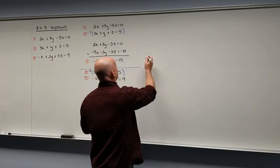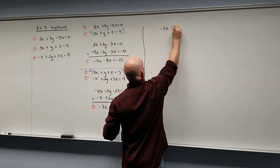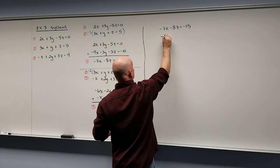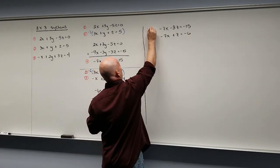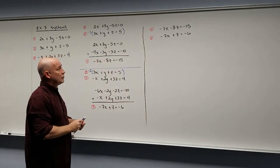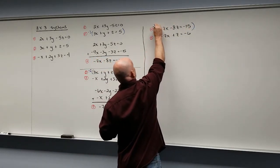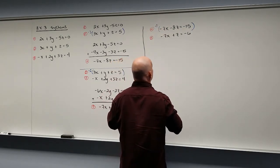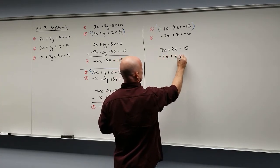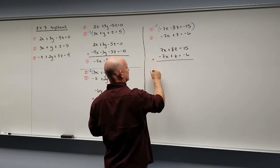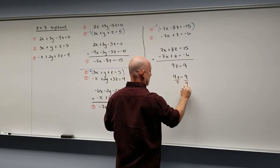Taking our two new equations: negative 7x minus 8z equals negative 15 (equation 4), and negative 7x plus z equals negative 6 (equation 5). To eliminate x's, I'll multiply equation 4 by negative 1, giving 7x plus 8z equals 15. Adding with equation 5, we get 9z equals 9, so z equals 1.